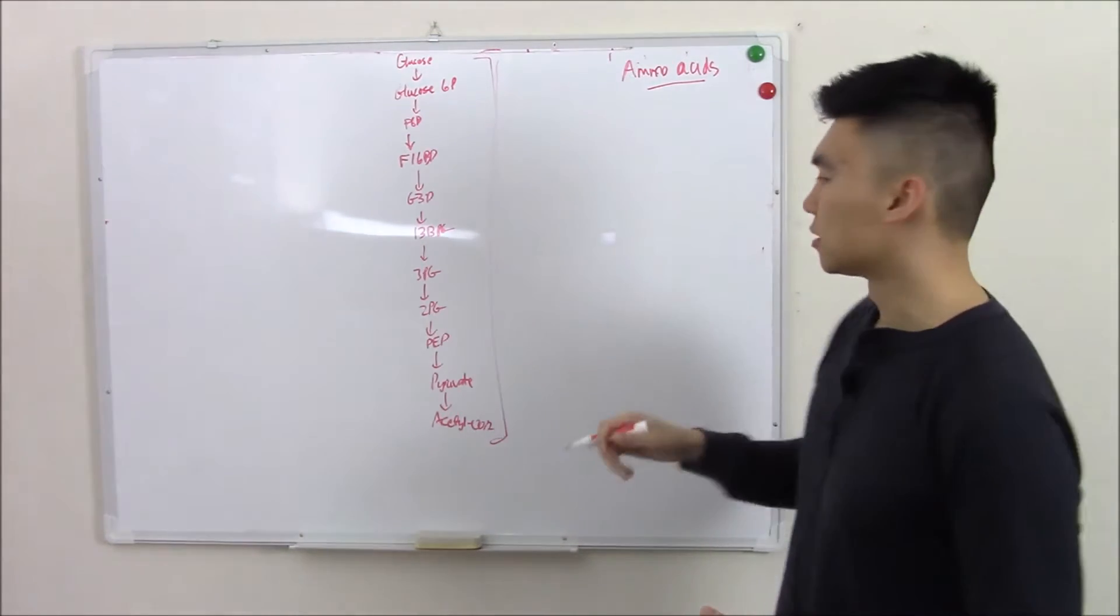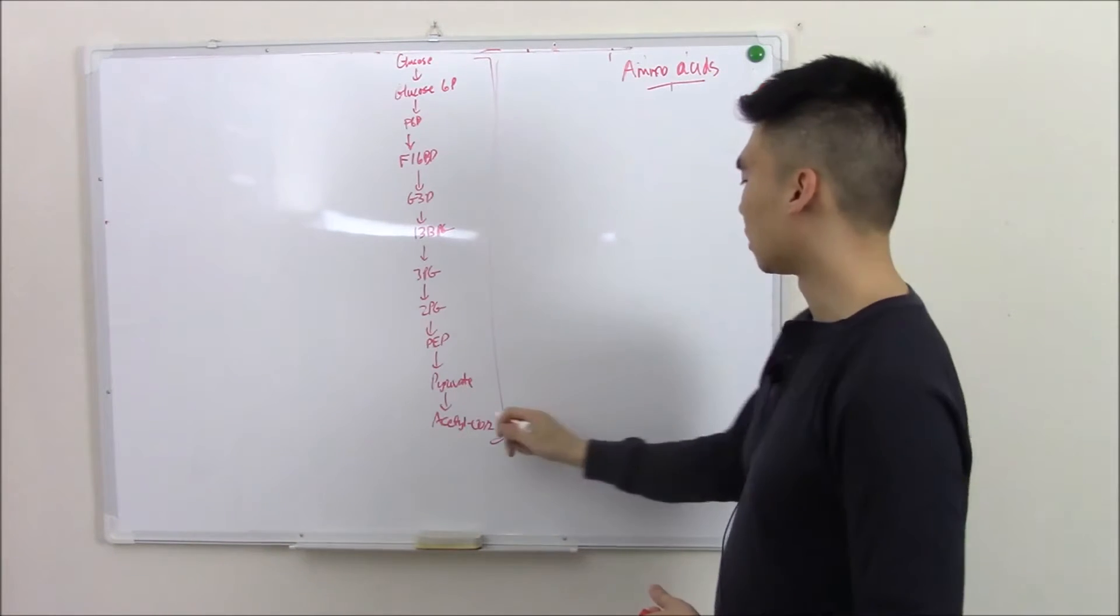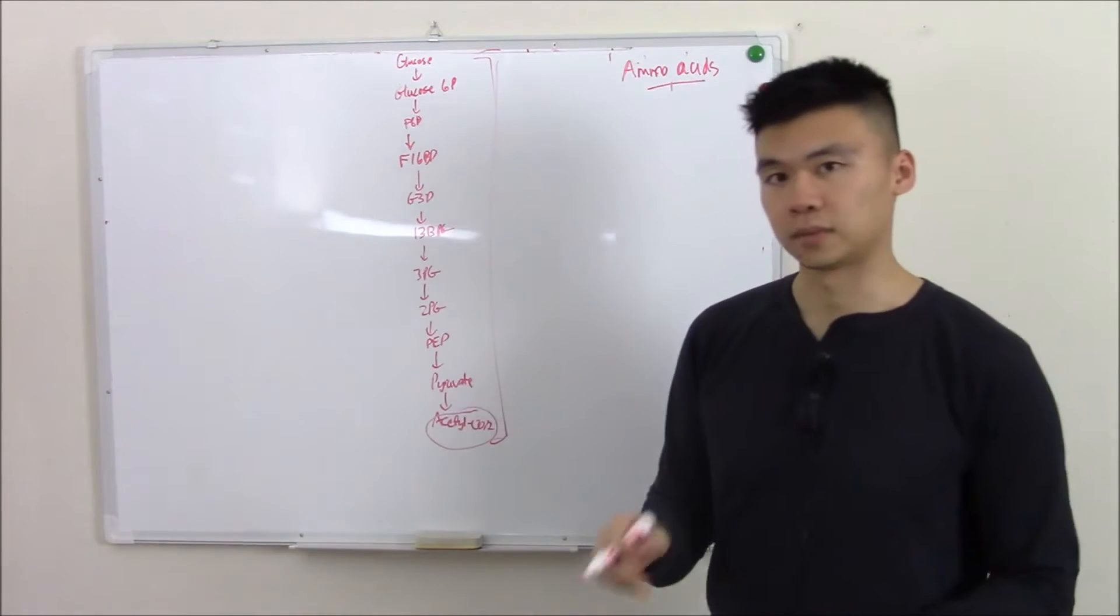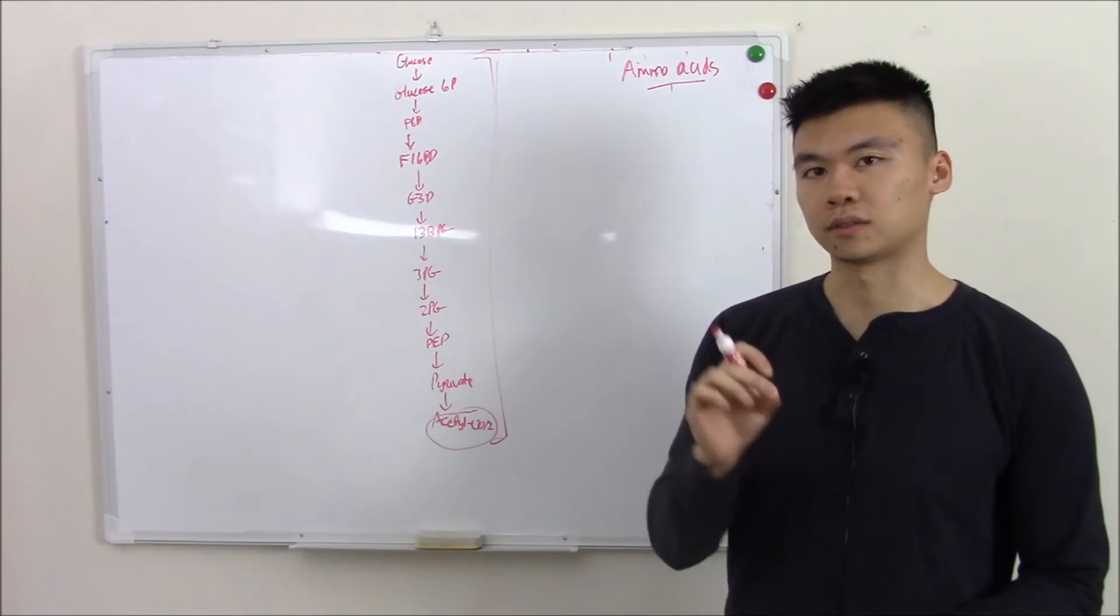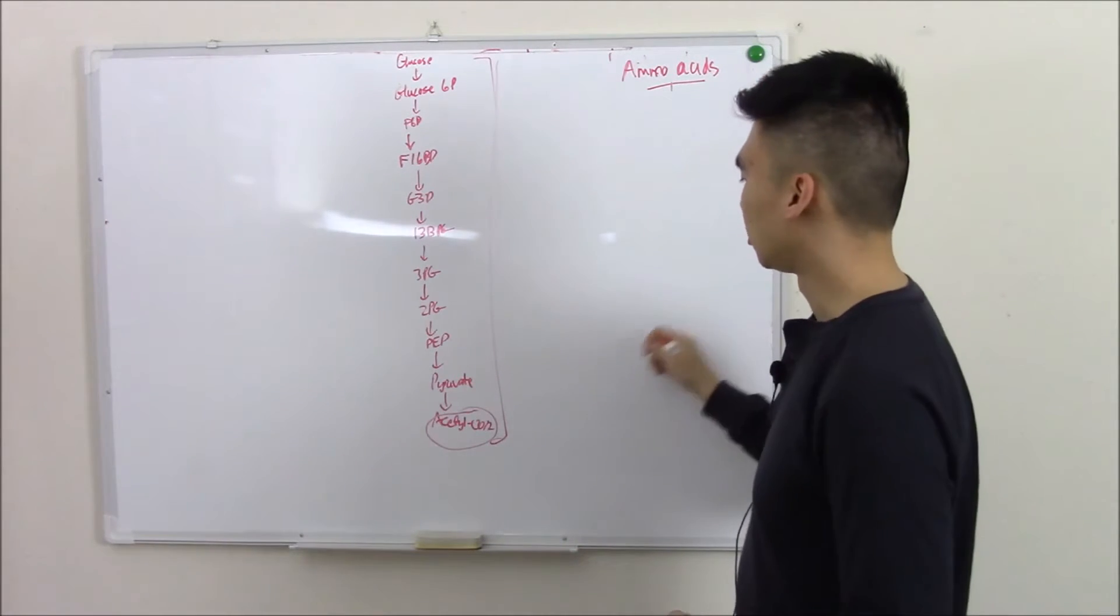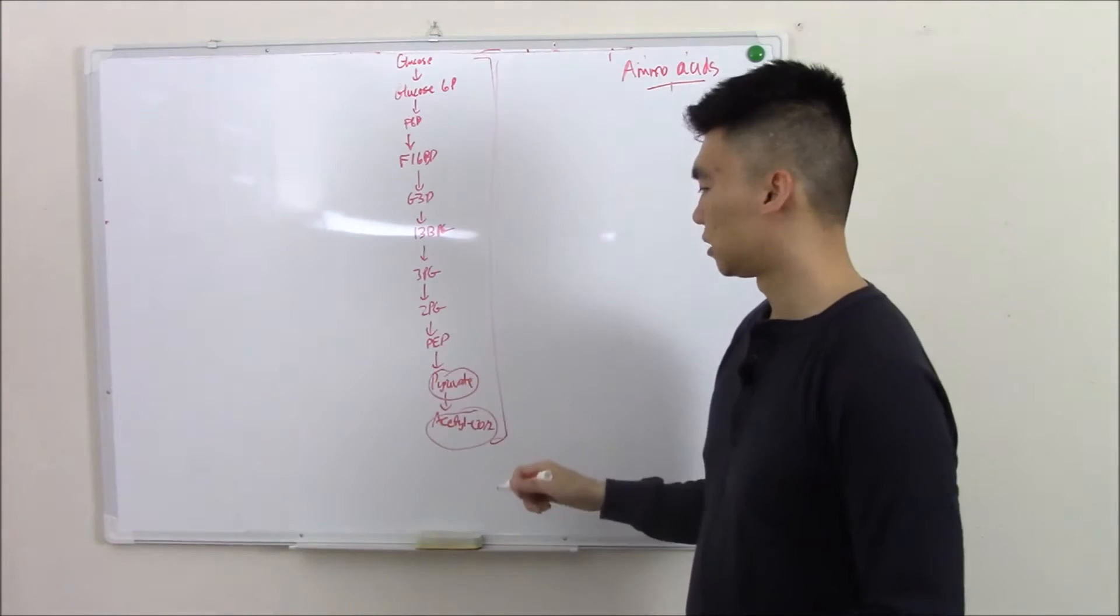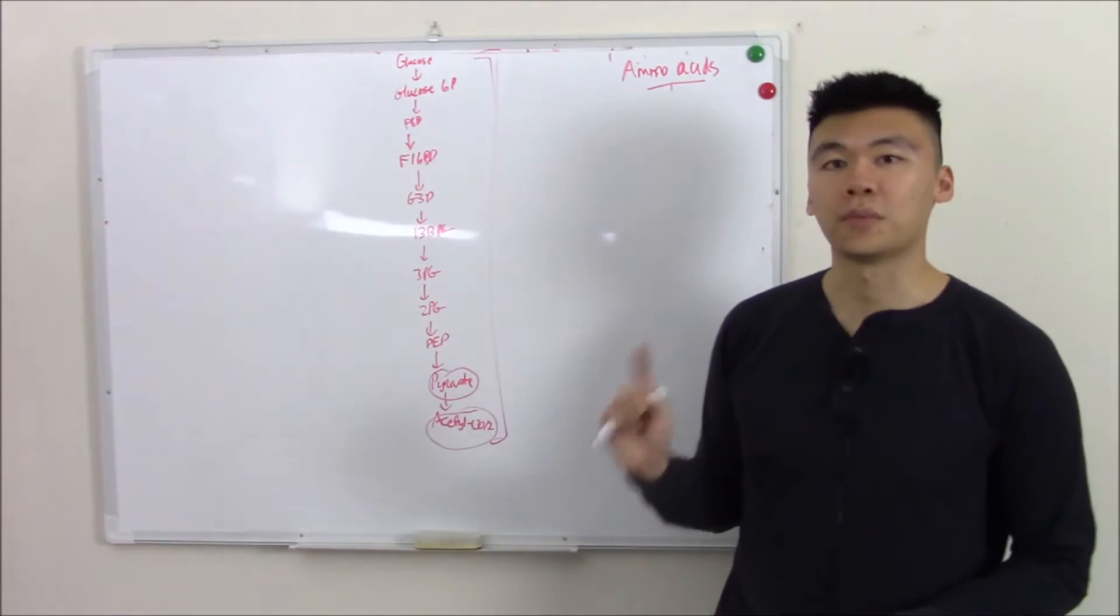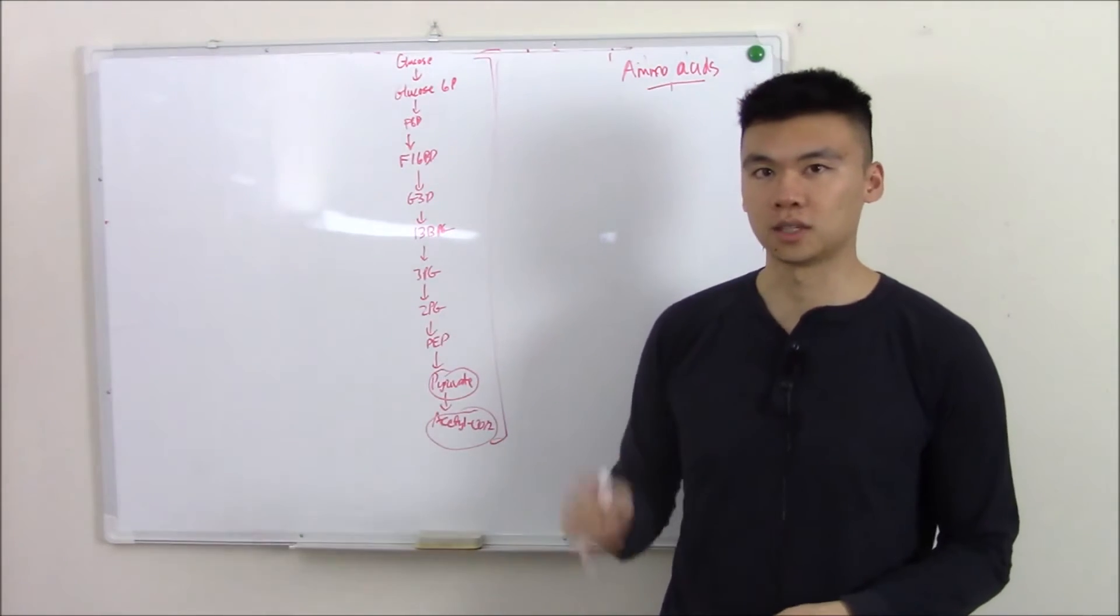Ketogenic amino acids turn into acetyl-CoA. If you recall, that was our building block for making ketones. Glucogenic amino acids turn into pyruvate and go through the pathway gluconeogenesis.